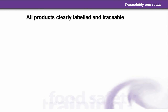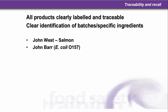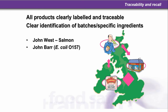Traceability and recall. All products must be clearly labelled and traceable, with clear identification of batches and specific ingredients. For example, when the John West salmon incident happened, there was not full traceability and so there was a full poisoning outbreak. Similarly, the John Barr butcher in Scotland in 1996, where E. coli O157 caused at least 22 people to die from poisoning. So again, we need to have full traceability and recall.